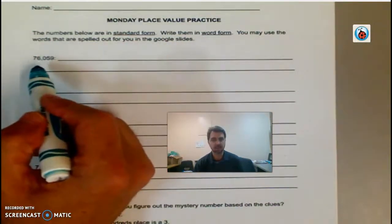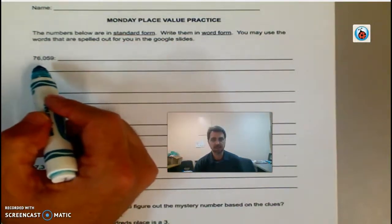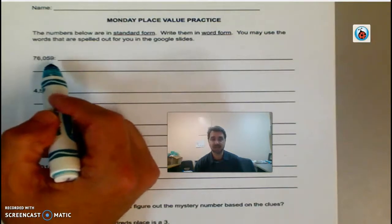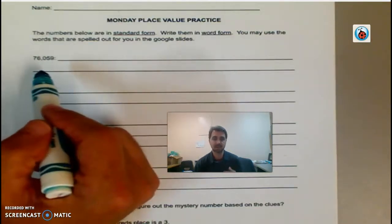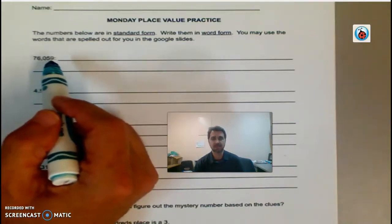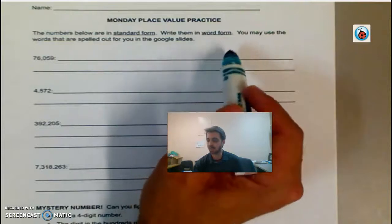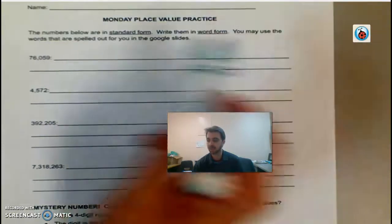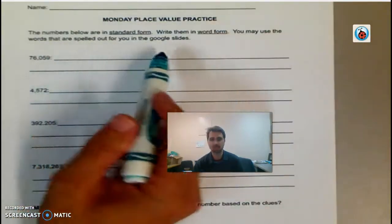So we'll do the first one together. Okay, so that says 76,059. It helps to say the number, that way it helps you to write the number. So 76,059. So you want to write it in word form.